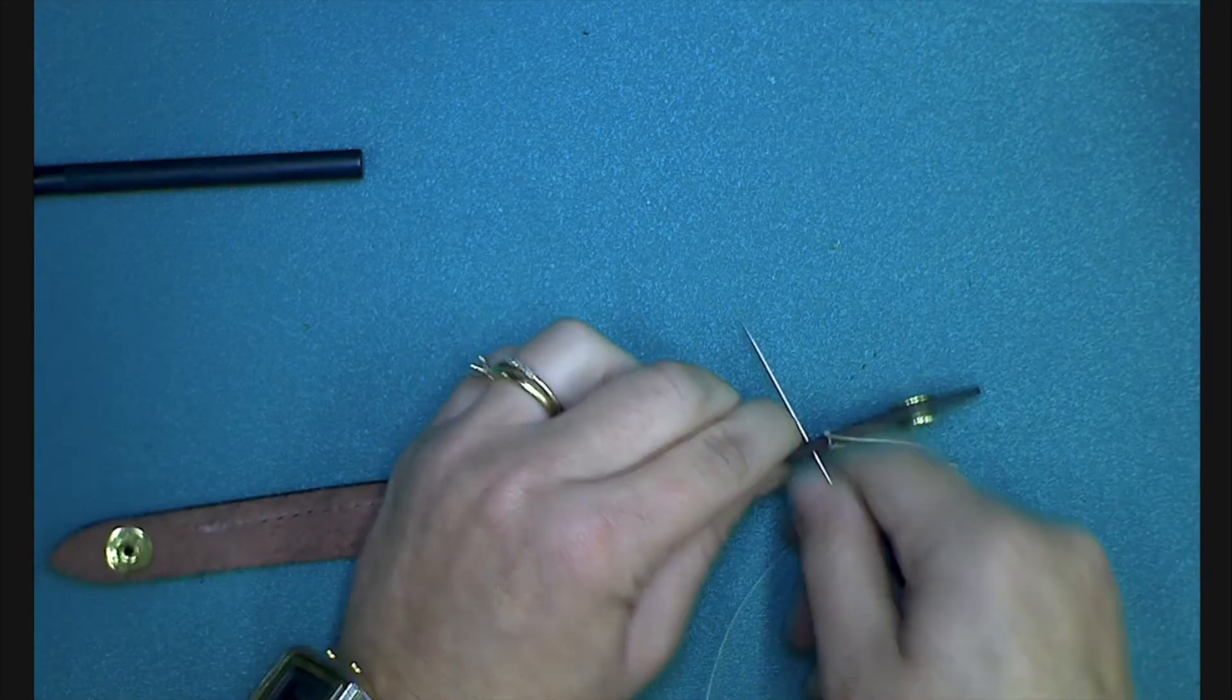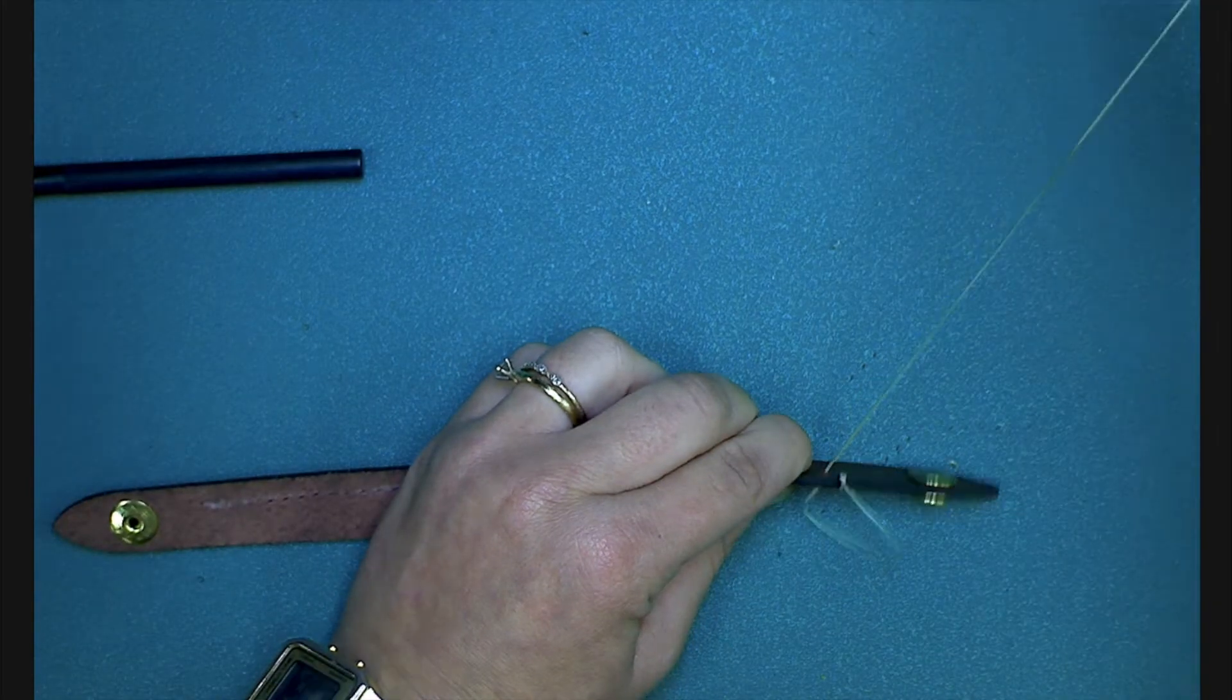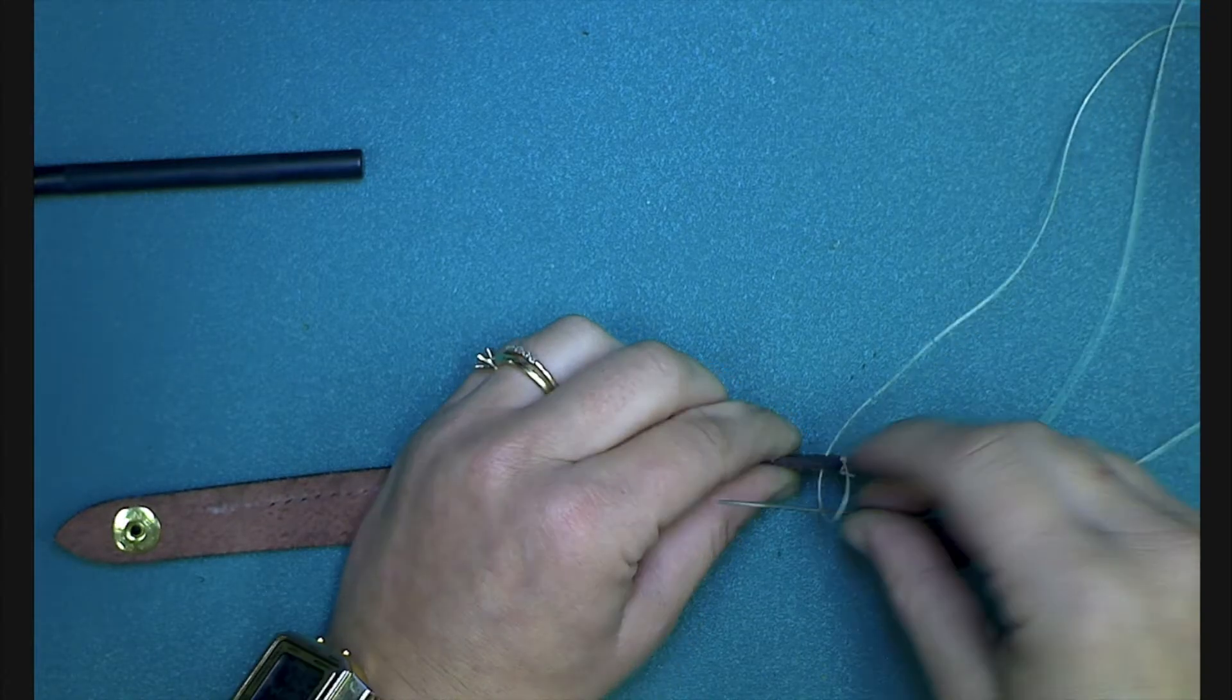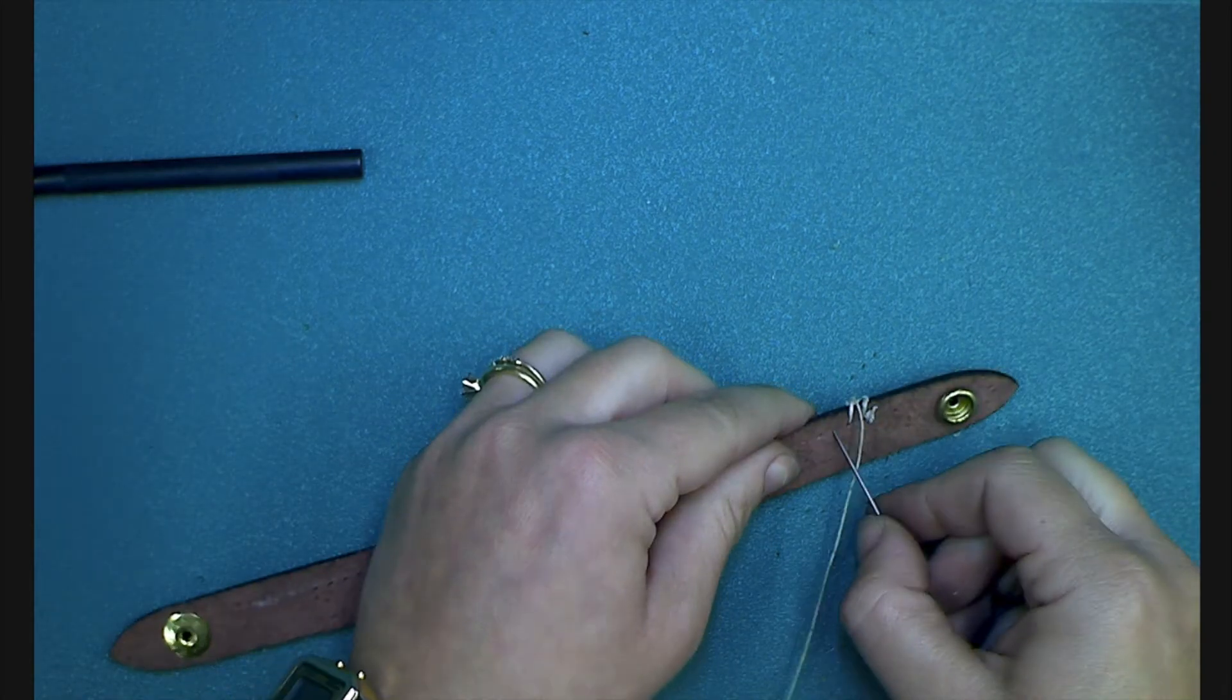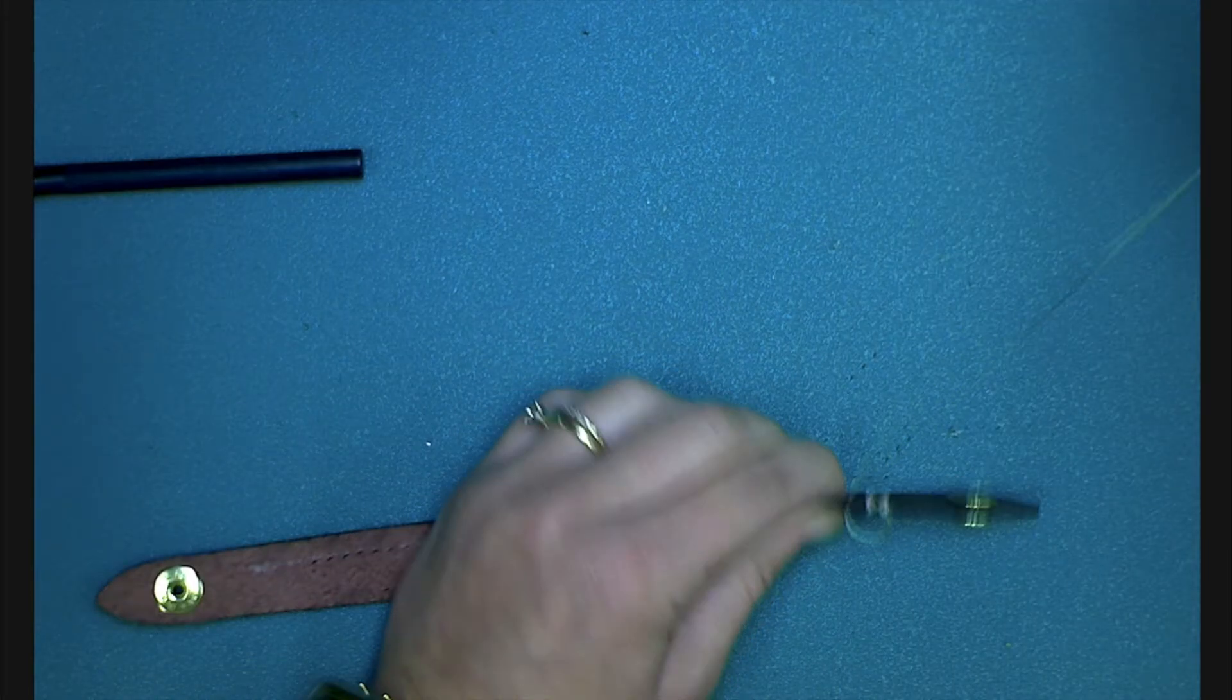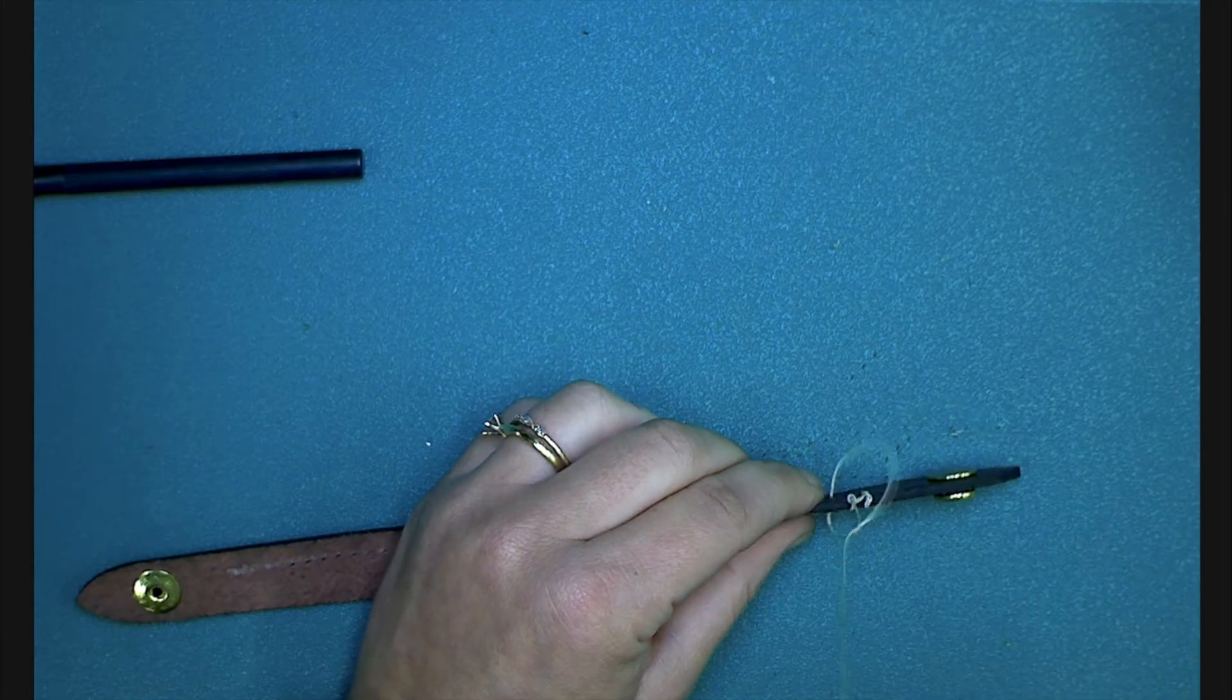This time again from the back through to the front through the second hole, and just before the thread is pulled tight, pause and thread the needle through the loop from right to left. Pull it tight. Repeat that process along. From the back to the front and then just before you pull it tight, through the loop from the right to the left.